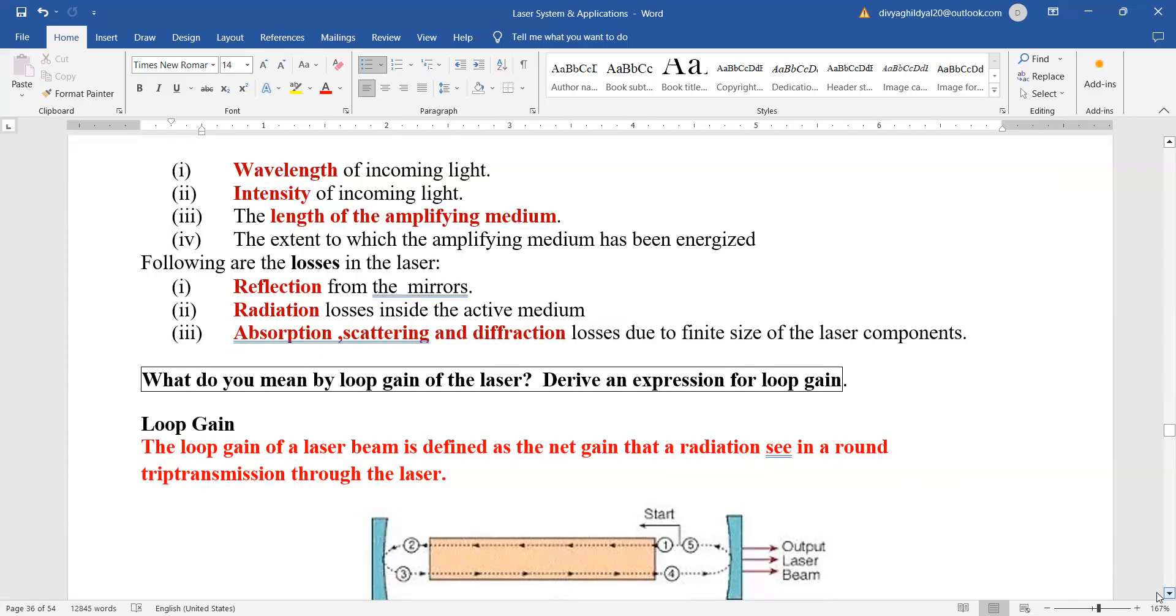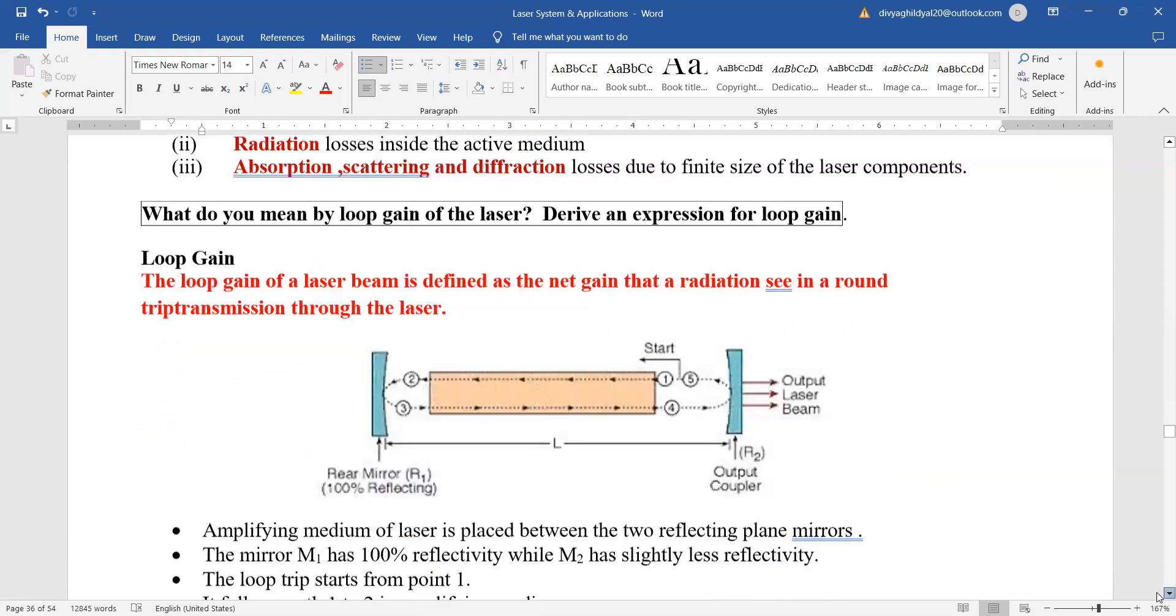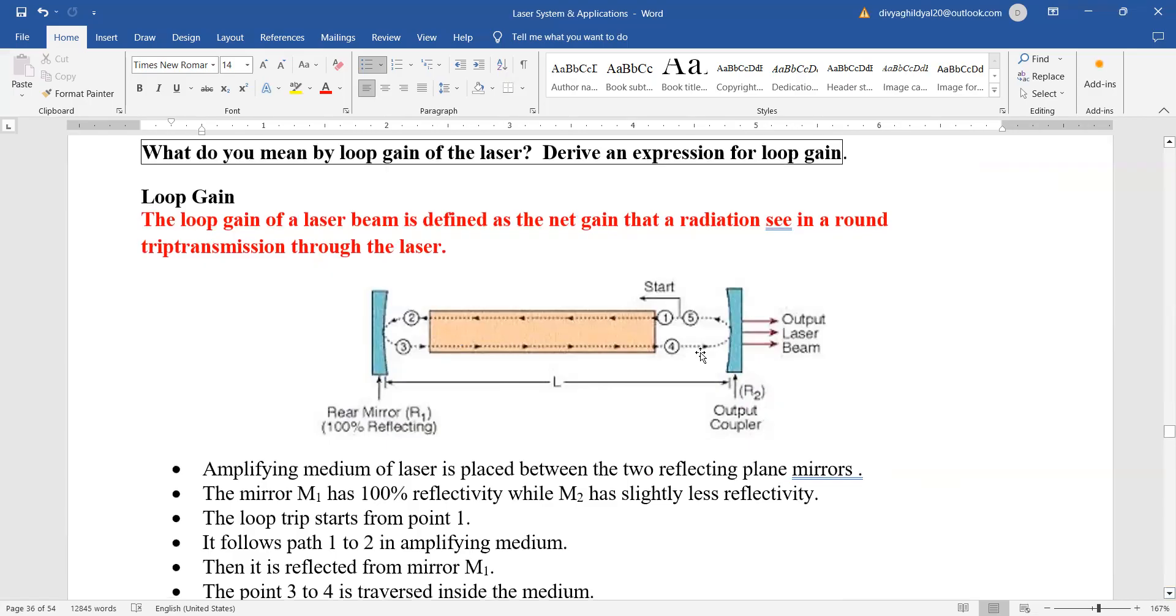Next question: what do you mean by loop gain of the laser and derive an expression for loop gain? Loop means one full circle. Have a look at this diagram. Loop gain of a laser beam is defined as the net gain that the radiation sees in a round trip transmission through the laser.